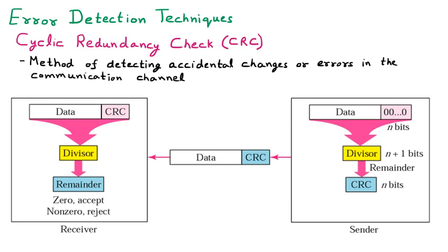Now let us look at the functionality of CRC. Suppose we have a sender with some data, for example '0010' — some bits of data. That data is sent to a divisor, which is going to divide the data. This divisor is fixed and common between the sender and receiver. The divisor may be of n+1 bits, and with that divisor we are going to divide the data.